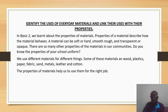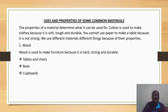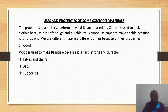There are so many properties of materials in our communities. We use different materials for different things. Some of these materials are wood, plastics, paper, fabric, leather, and so on. The properties of materials help us to use them for the right purpose. For example, cotton is used to make clothes because it is soft, tough, and durable. You cannot use paper to make a table because it is not strong.